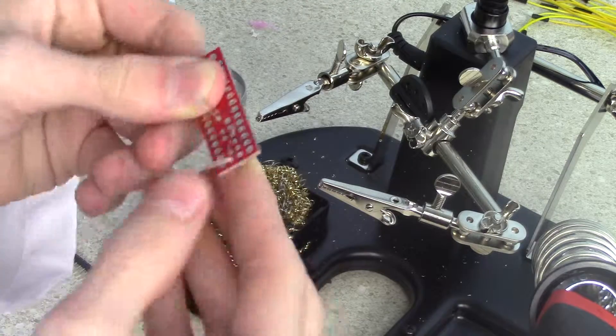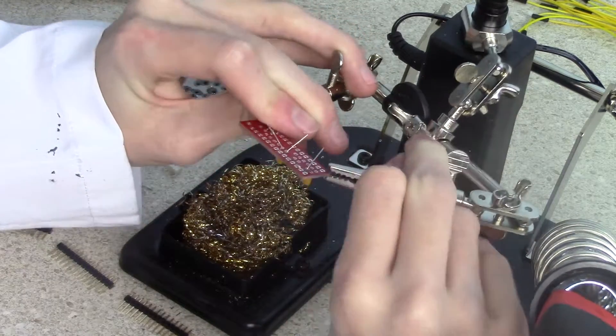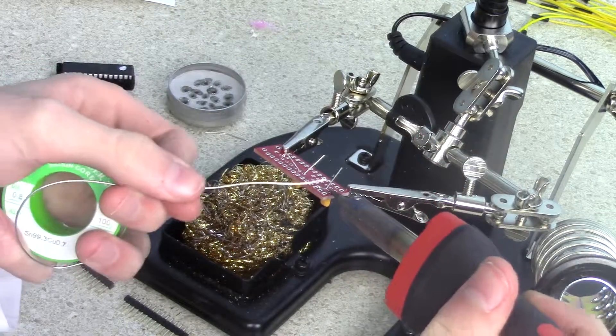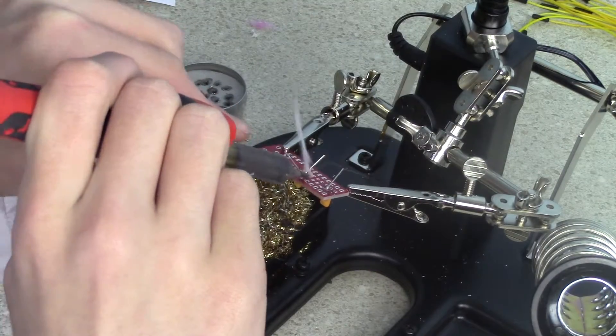First things first, you're going to want to put the two yellow capacitors in the slots labeled C1 and C2, which are the rightmost, assuming the side with the half circle mark is right, and the third from the right slots.